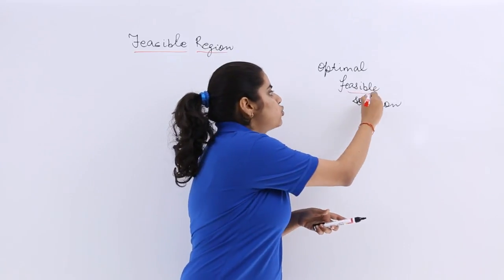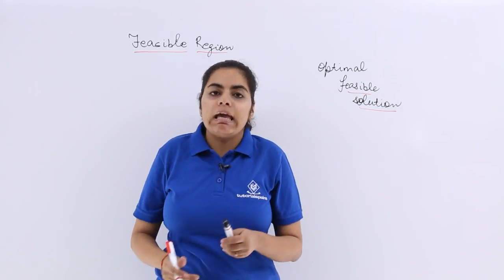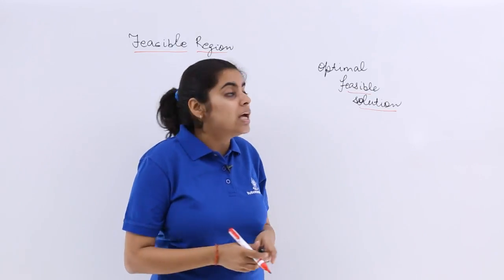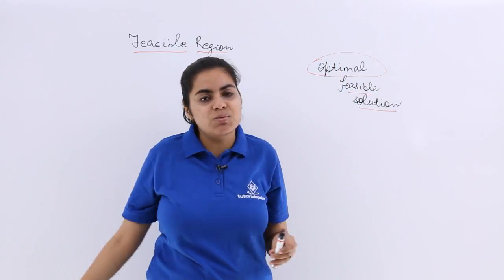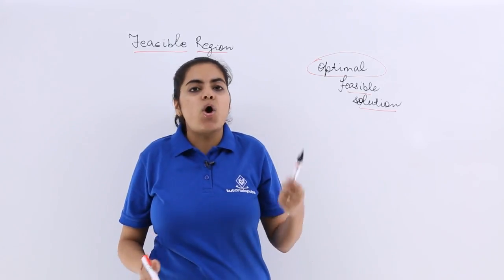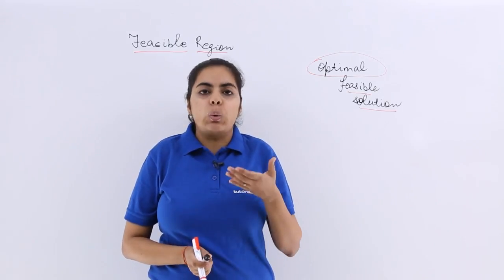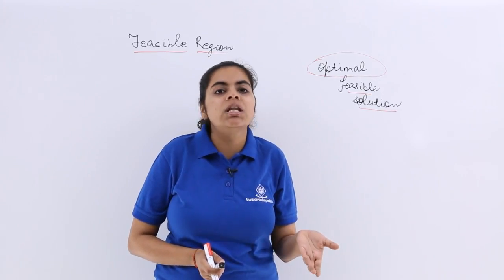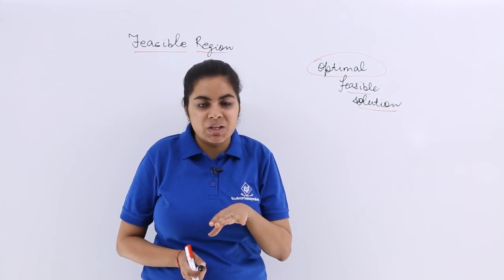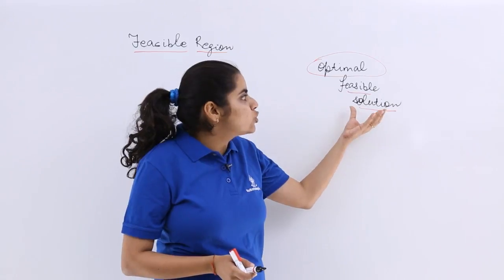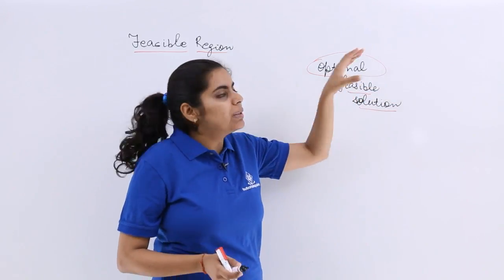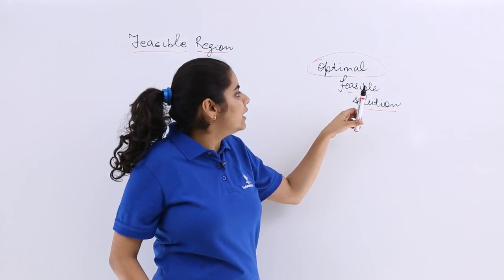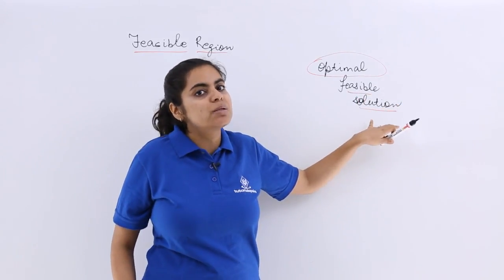Every point in the feasible region is called a feasible solution. Now why is the term optimal associated? Optimal means responsible for both maximization or minimization. So if the feasible solution also does your work of optimization, then that feasible solution would be specifically called an optimal feasible solution.